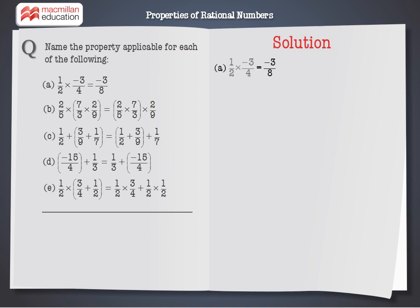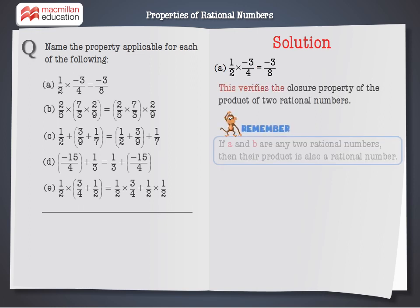In A, the left-hand side shows product of two rational numbers and the right-hand side is a rational number. This verifies the closure property of the product of two rational numbers.